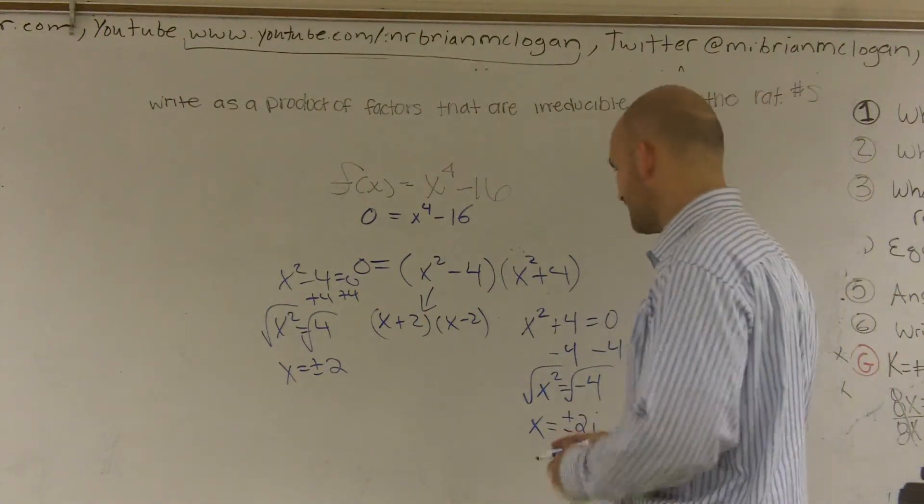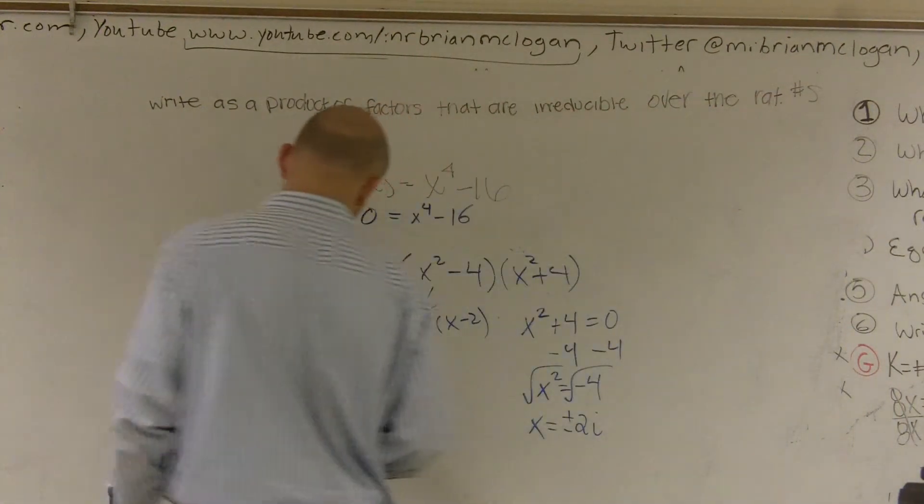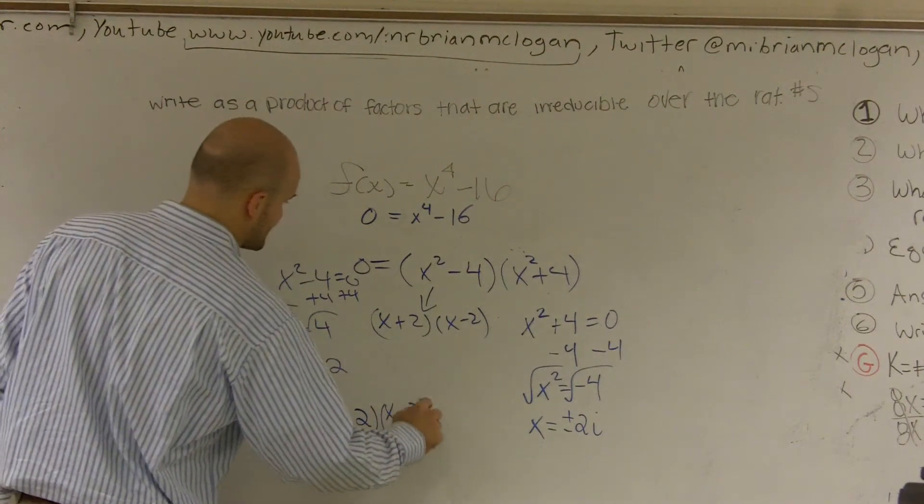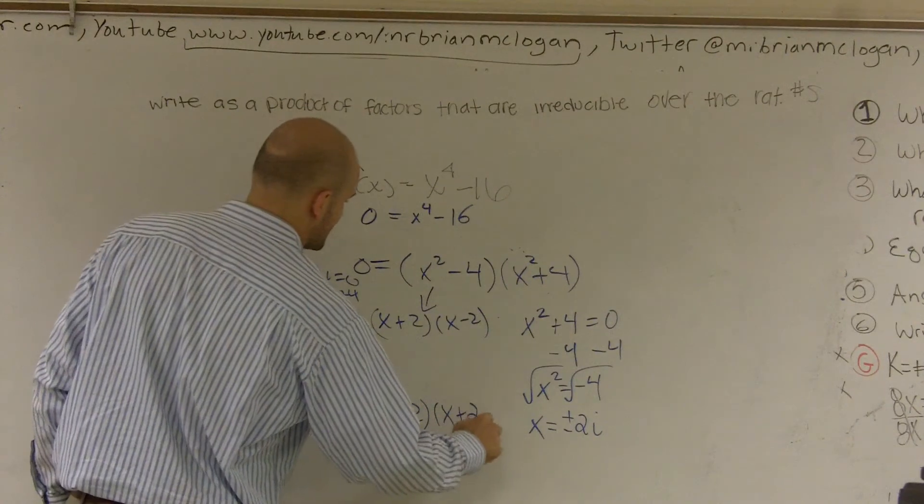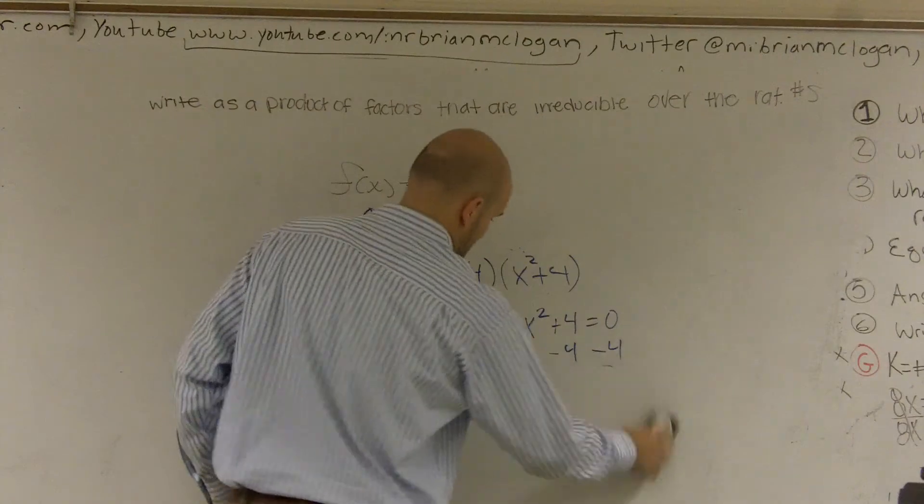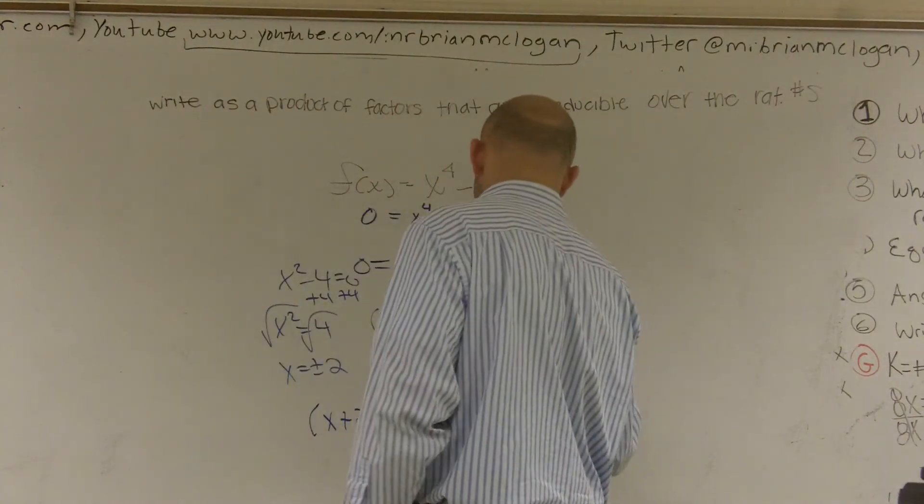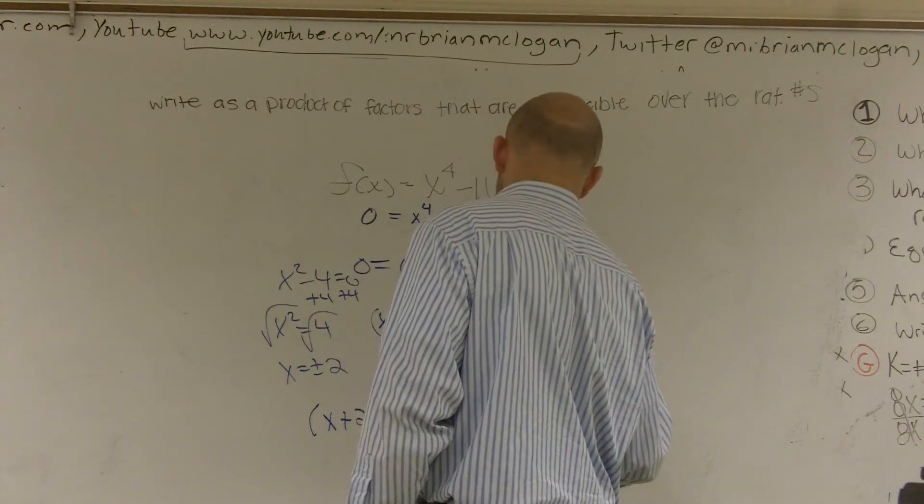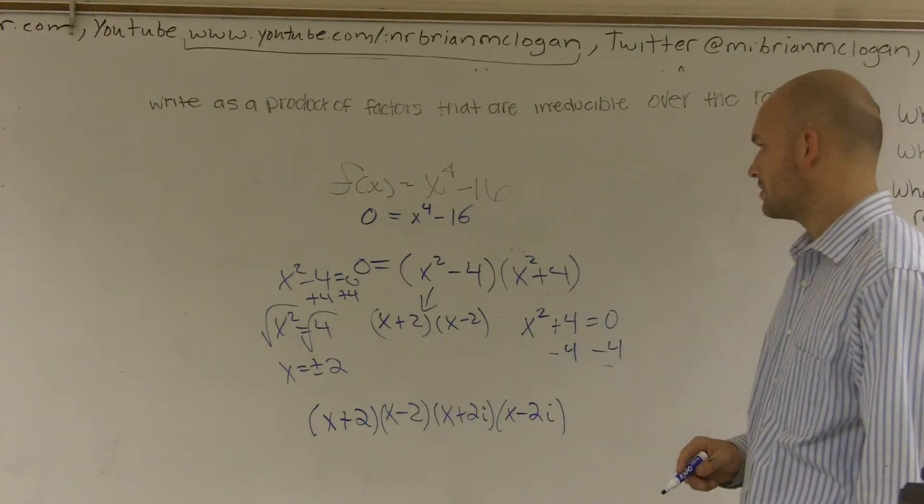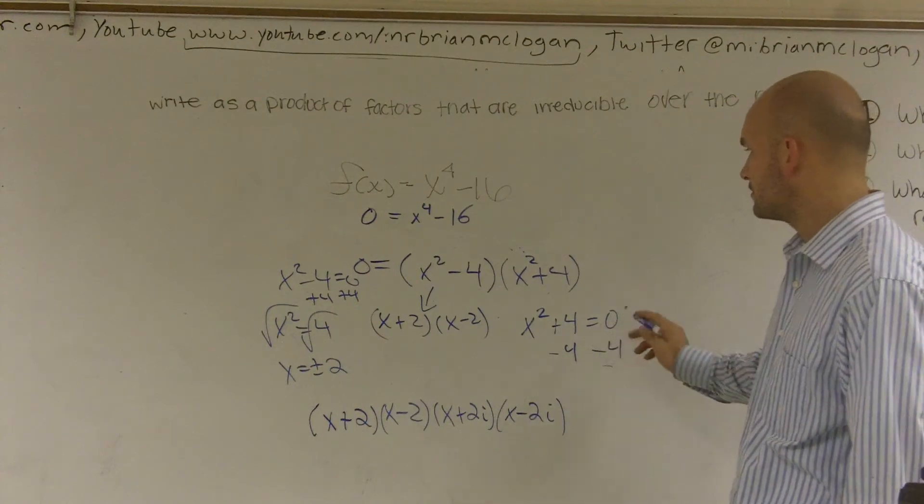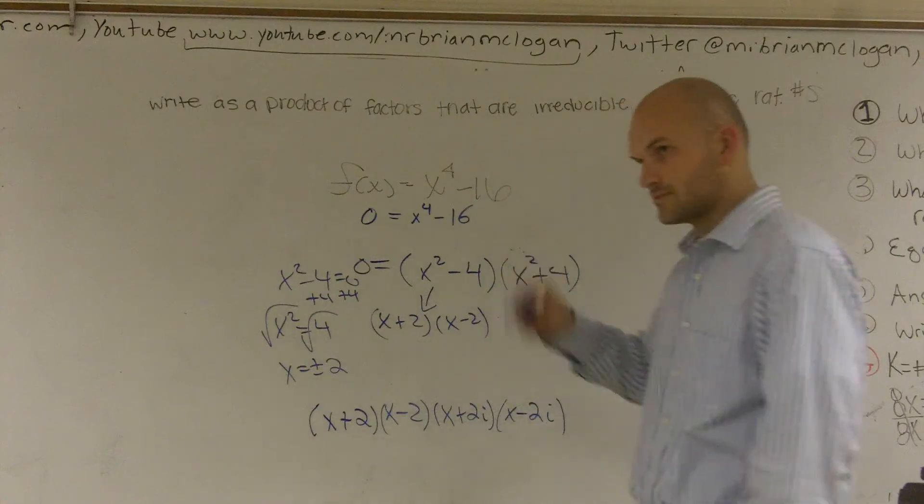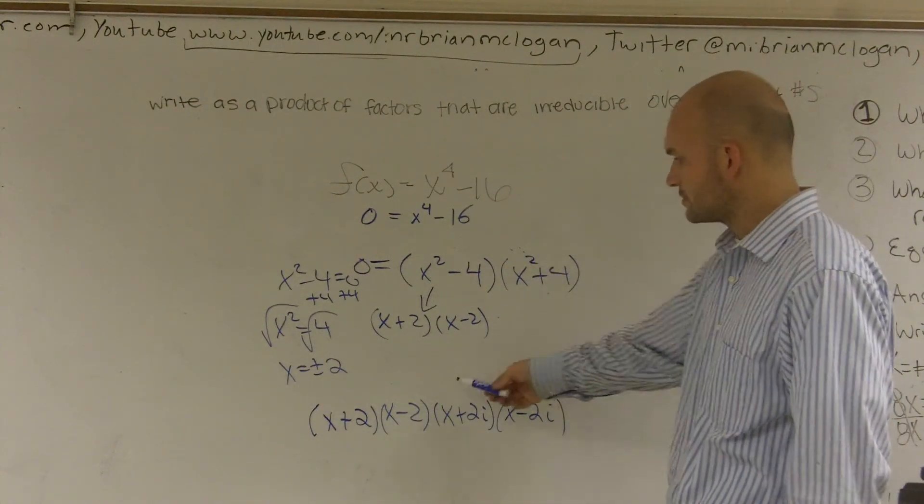So when writing it out as my factor of factors, x plus 2 times x minus 2 times x plus 2i times x minus 2i. Wouldn't it just be x plus 2i to x plus 2i? Or no? No, because remember, did you see my work here? Oh, I'm sorry, I'm sorry. It was x plus or minus 2i. Right, 2i. Right, so those are your all zeros.